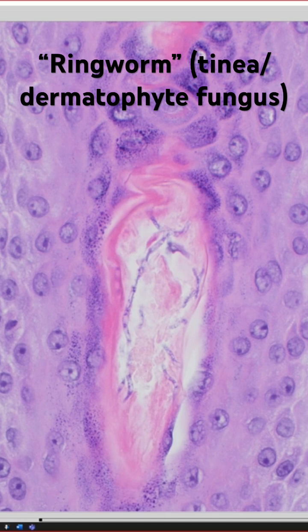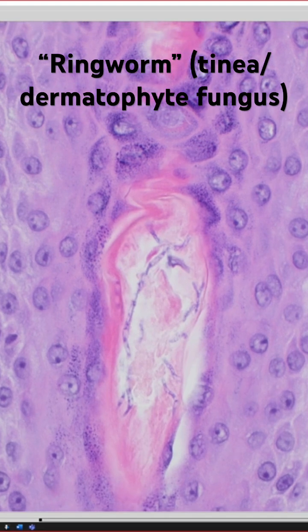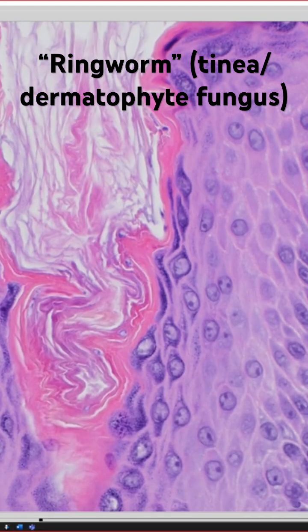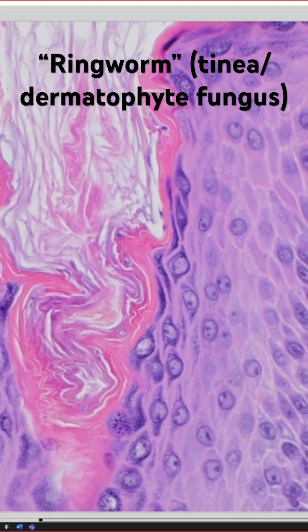But every once in a while — and I don't know why it is — every once in a while I'll see dermatophytes actually show up and be visible as a purplish-blue on H&E. But most of the time in my lab, at least in my experience, they usually are clear. But you can see them here.